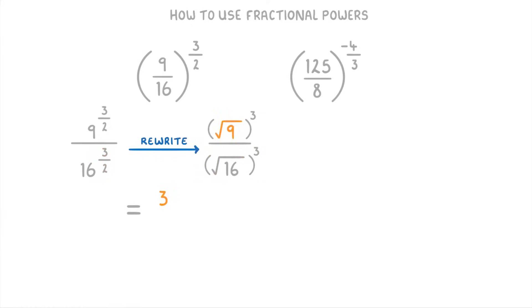Which simplifies to 3 cubed over 4 cubed, or 27 over 64.